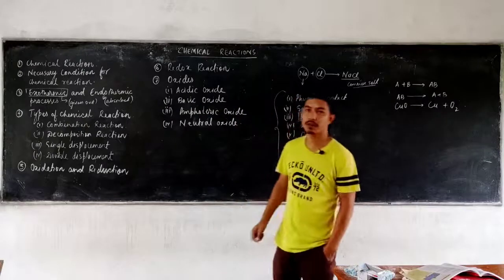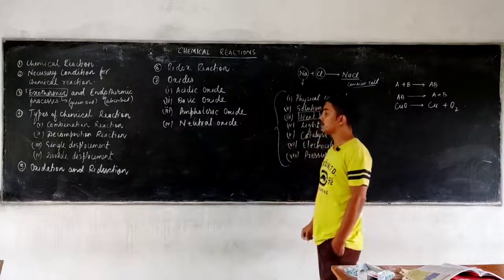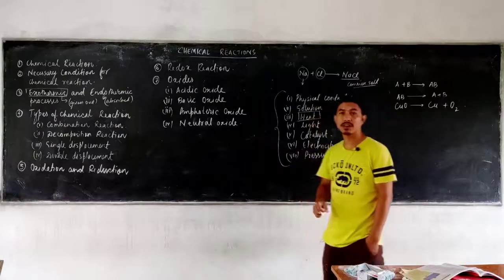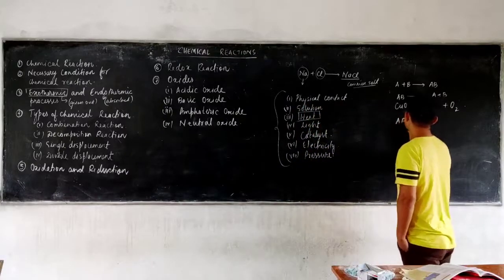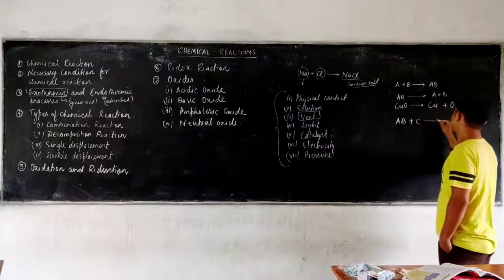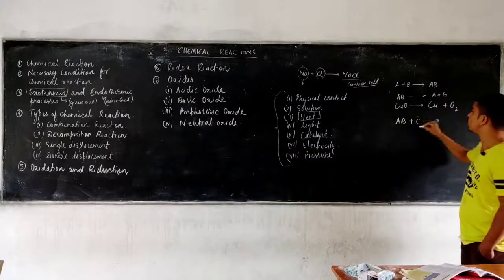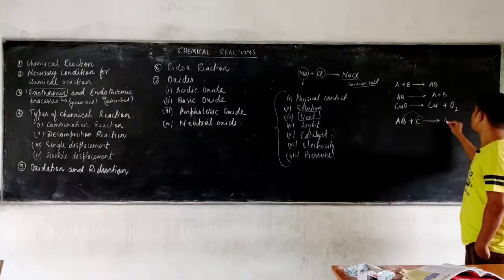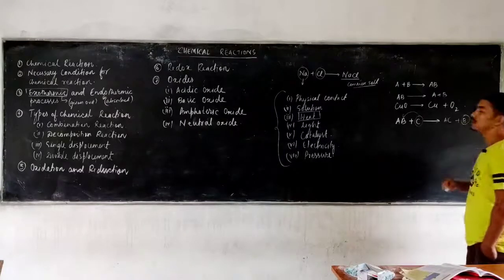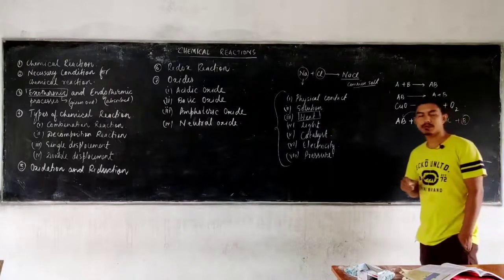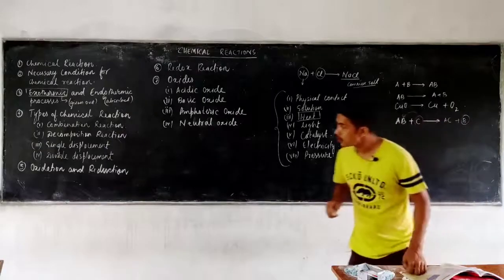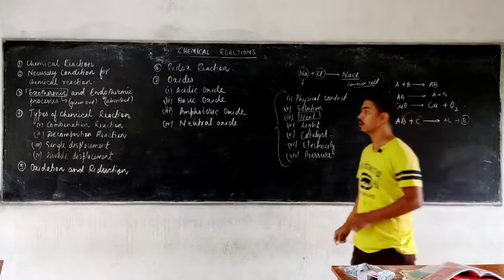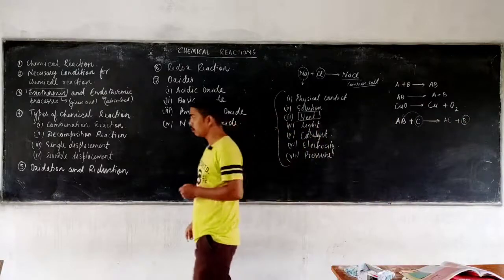The third type is single displacement reaction. In this, a more reactive element displaces a less reactive element. For example, if we have compound AB reacting with element C, and C is more reactive than B, then C displaces B to give AC plus B — so B is displaced. Such a reaction is known as a single displacement reaction. Examples can be found in your book.